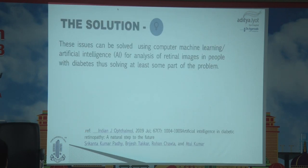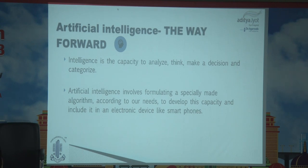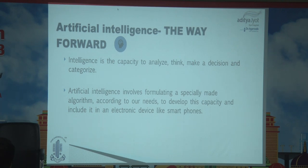The solution: these issues can be solved using computer machine learning or AI for analysis of retinal images in people with diabetes, thus solving at least some part of the problem — again published by our RPA center group, Atul Kumar et al. And AI — the way forward. Intelligent is the capacity to analyze, think, make a decision, and categorize. Artificial intelligence involves formulating a specially made algorithm according to our needs to develop this capacity and include it in an electronic device like the smartphone.